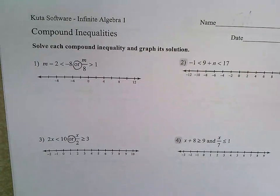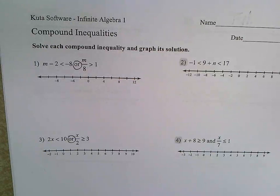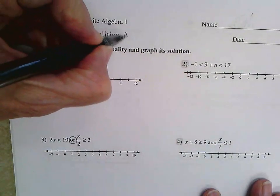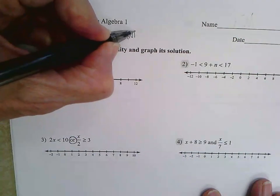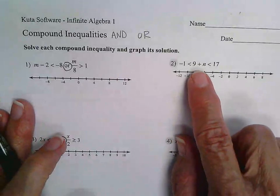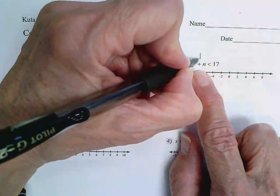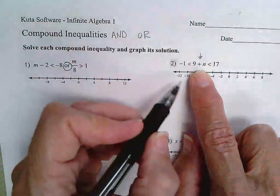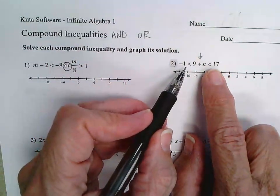Compound inequalities. With compound inequalities, like a compound sentence, we're joining two things together. There are actually three different ways it can be done: it can be done with the word 'and', it can be done with the word 'or', and it can also be done by just inserting another expression between two inequality sides.